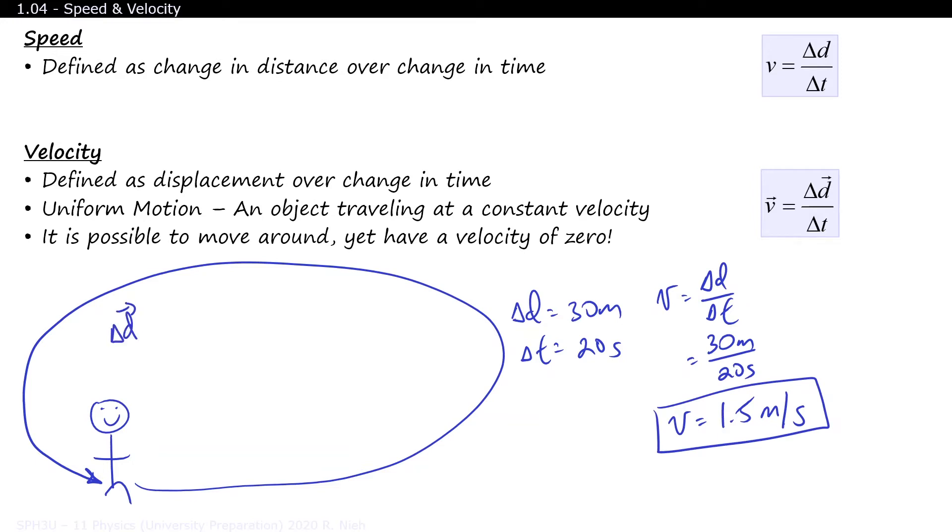However, if I finish at the same spot as where I started, then I would have a displacement of zero. And according to the formula, velocity is displacement over time, so zero divided by any amount of time still remains at zero.